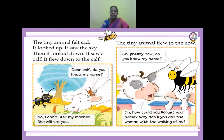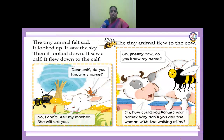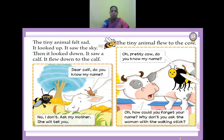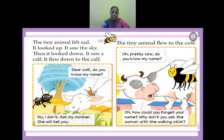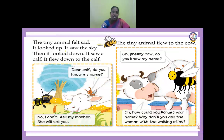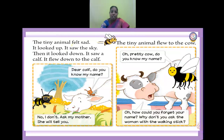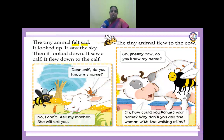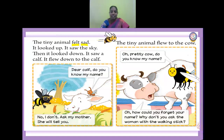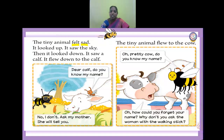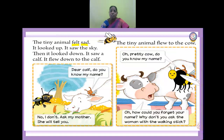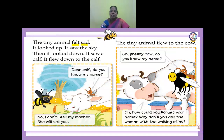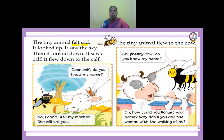The tiny animal felt sad. It looked up and saw the sky, then looked down and saw a calf. What do you mean by felt? Felt is the past tense of feel. The opposite of sad is glad. The tiny animal felt sad. It looked up and saw the sky. Then it looked down, saw a calf, and flew down to the calf.